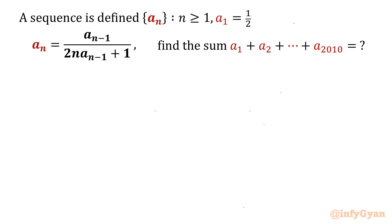Welcome back to Infigyan, my dear friends. In this very exciting and challenging question from Ecuador Math Olympiad 2010, a sequence is defined as {an} for n ≥ 1, where a1 = 1/2 and an = (an-1)/(2n·an-1 + 1). Then we have to evaluate the sum a1 + a2 + a3 + a4 up to a2010.